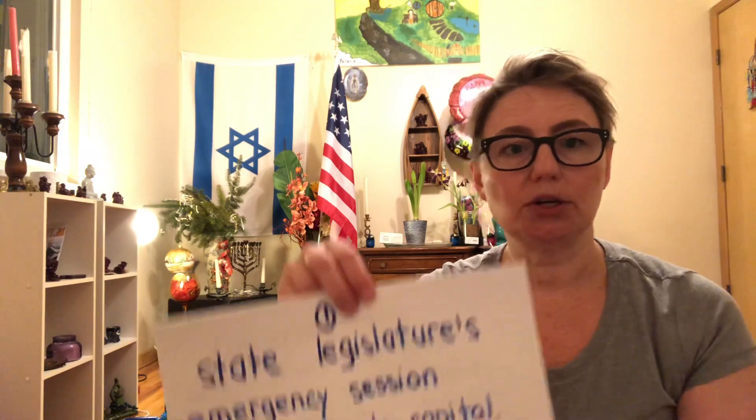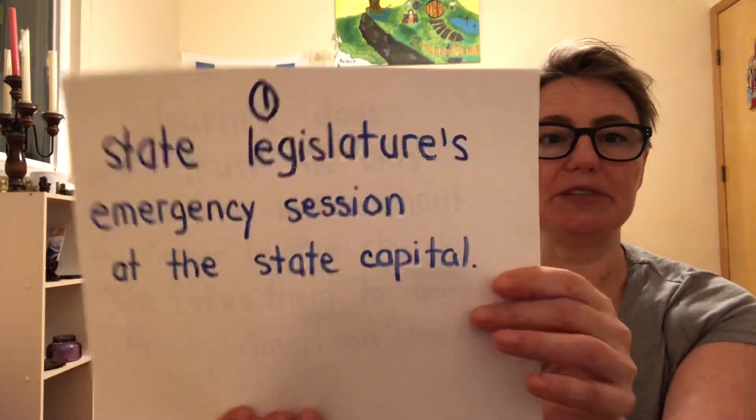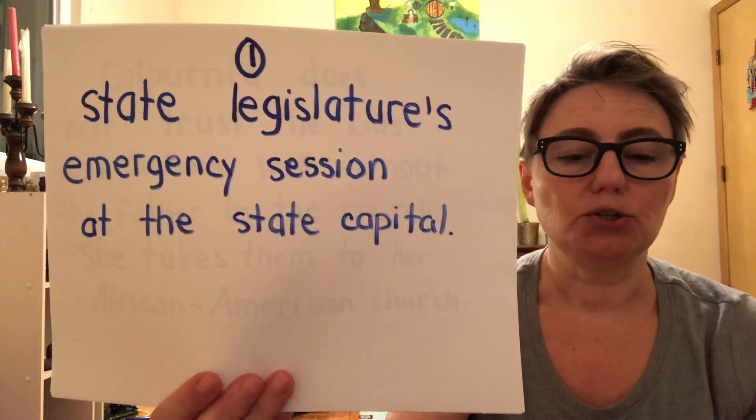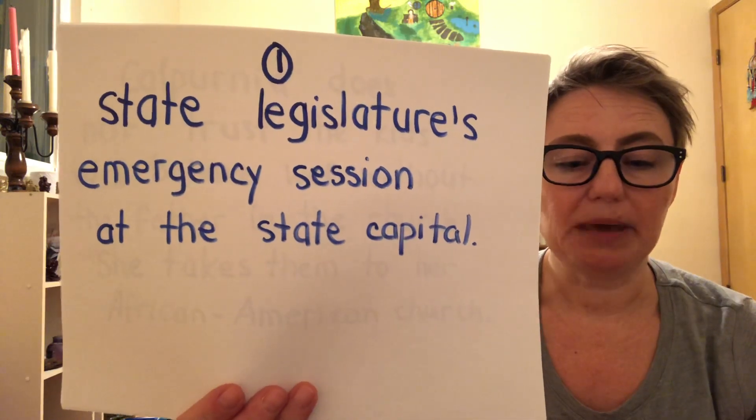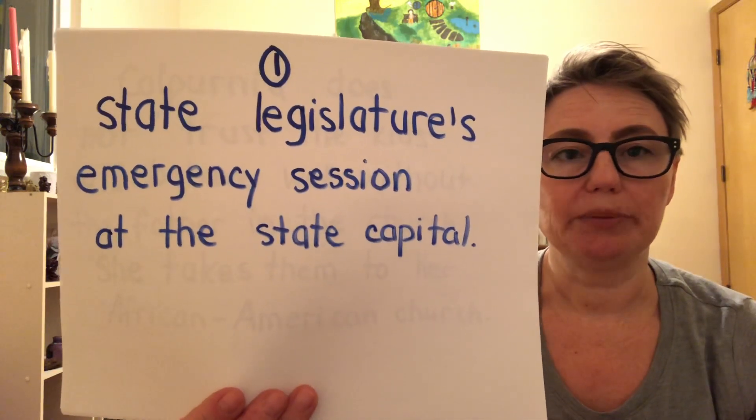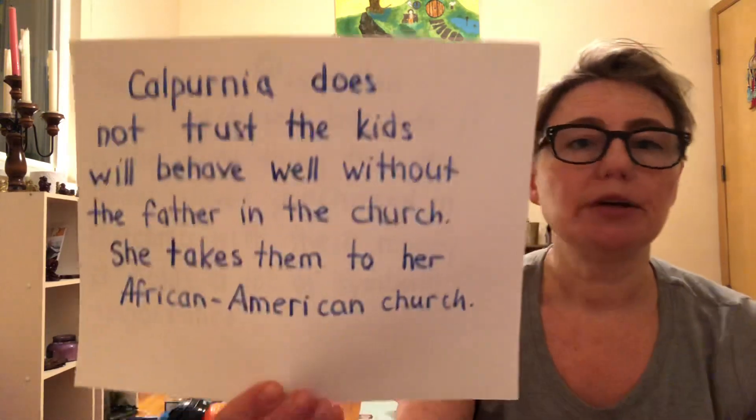The children's names, if you forgot, are Jim, the boy, and Scout, the girl. The father's name is Atticus. He went on a business visit to another city for a period of time, and Calpurnia had to stay with the children because they were still too young to be by themselves.